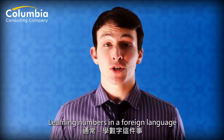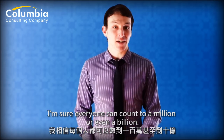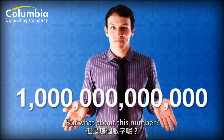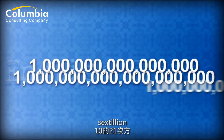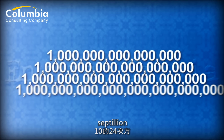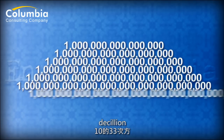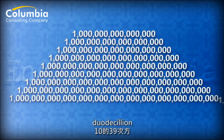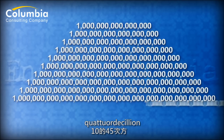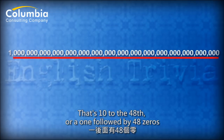Learning numbers in a foreign language probably comes right after learning the alphabet. I'm sure everyone can count to a million, or even a billion. But beyond that, we have trillion, quadrillion, quintillion, sextillion, septillion, octillion, nonillion, decillion, undecillion, duodecillion, tredecillion, quattrodecillion, and quindecillion — that's ten to the 48th, or a one followed by 48 zeros.